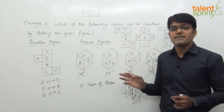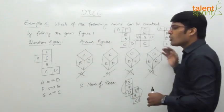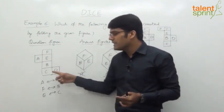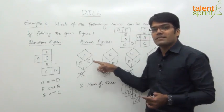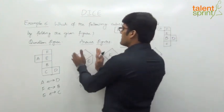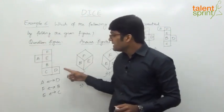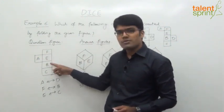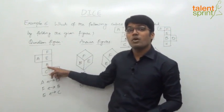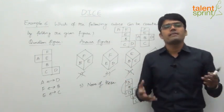The question can be asked in different ways. Sometimes an open figure is given and you find the closed one. Other times, a closed figure showing three faces is given, and four open figures are provided — you find which open figure is possible. The concept is the same: check what is adjacent versus opposite. For example, if the question figure shows F adjacent to B and F adjacent to E, but an answer figure shows F opposite to B, that answer is wrong. Always check adjacency versus opposition.